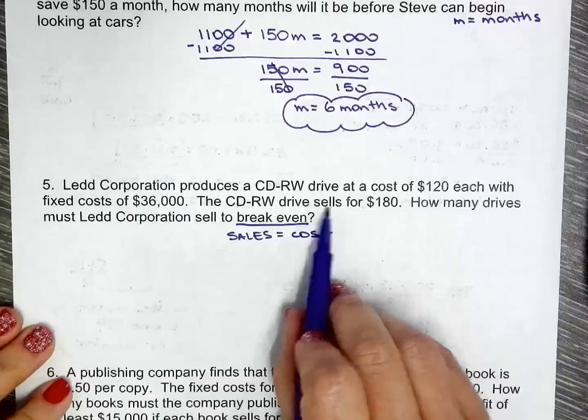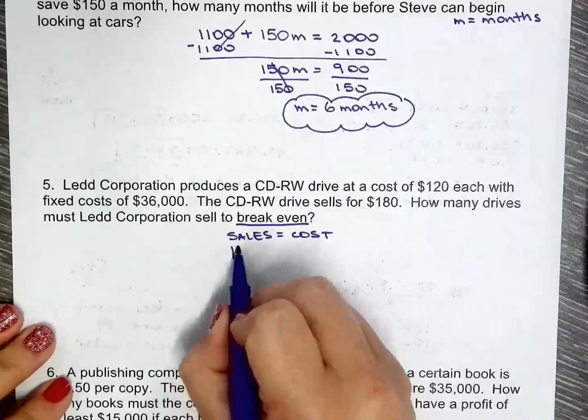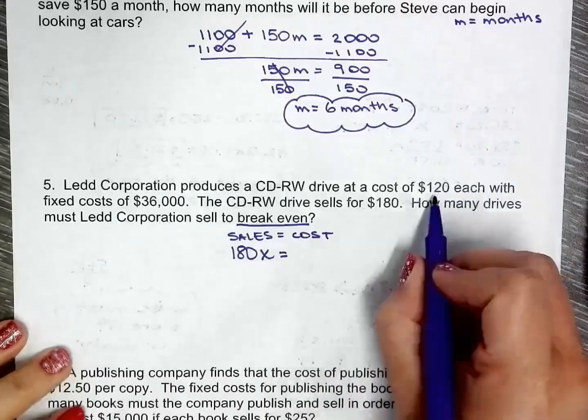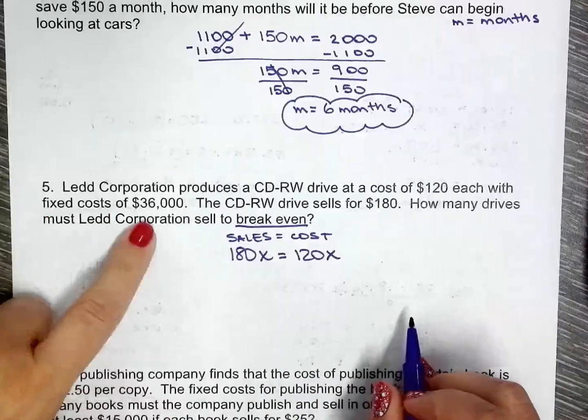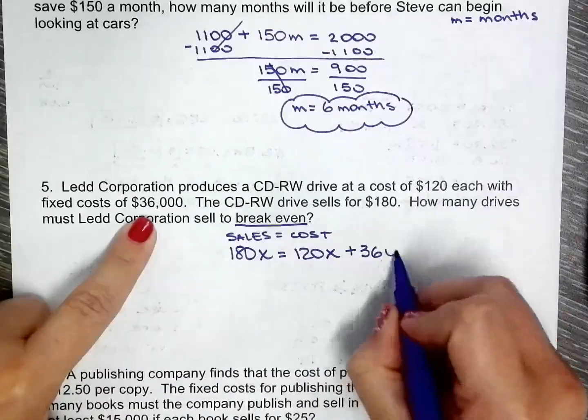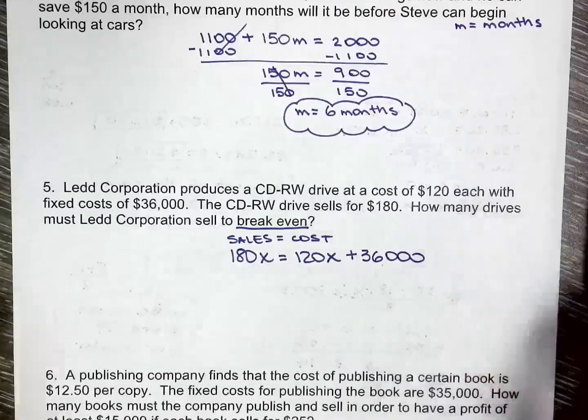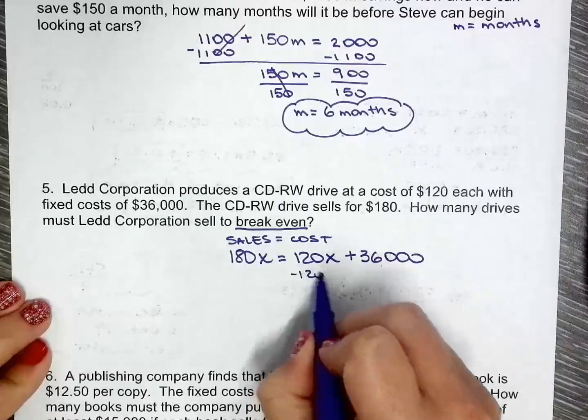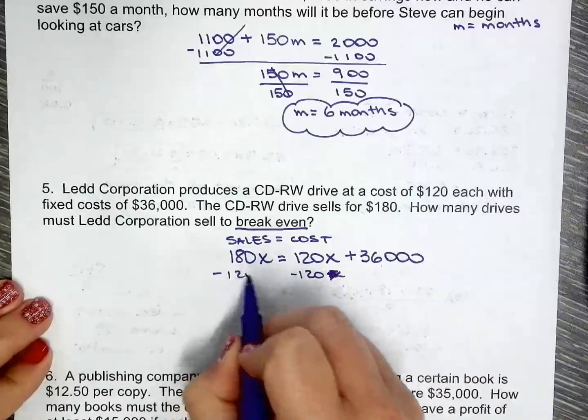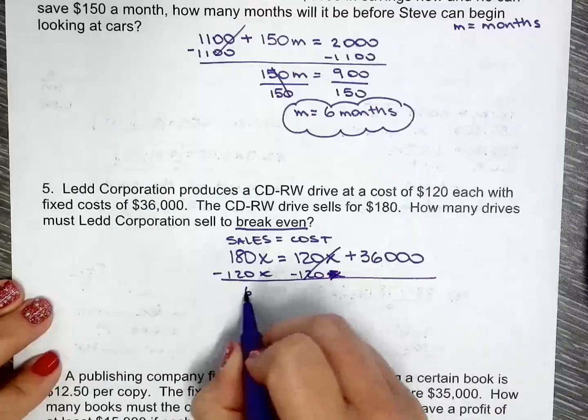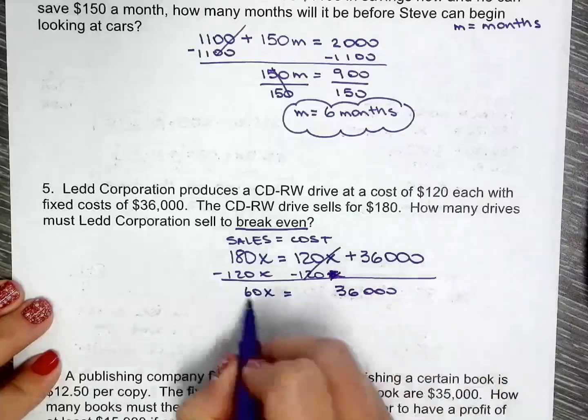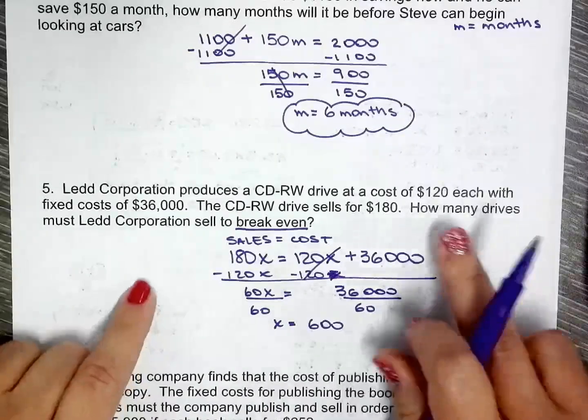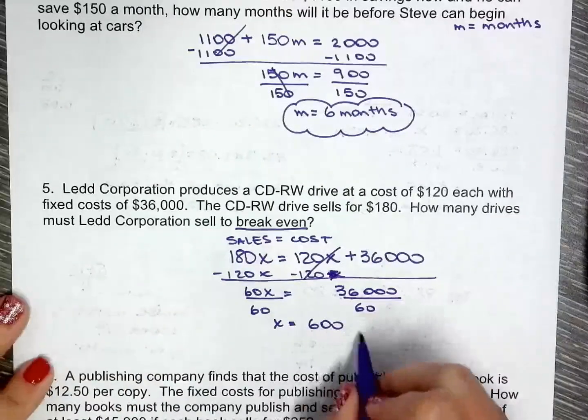So the sales, it says right here, each drive sells for $180. So each one will give you $180, but the cost is $120 each and they have the fixed cost, for building, electricity, employees, water, you name it, just to get the building to operate, that's $36,000. I will minus $120X on both sides, that equals zero. And then you divide. So that will be after how many drives will they break even? At 600 drives.